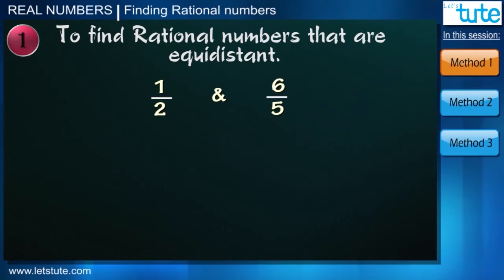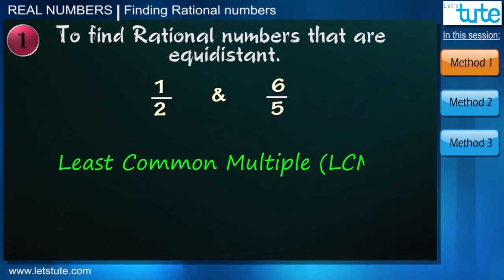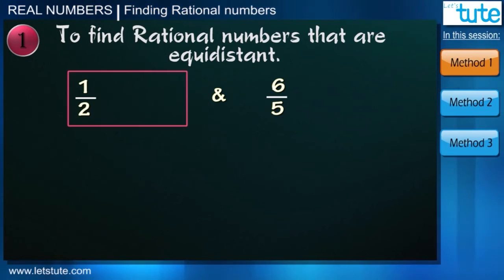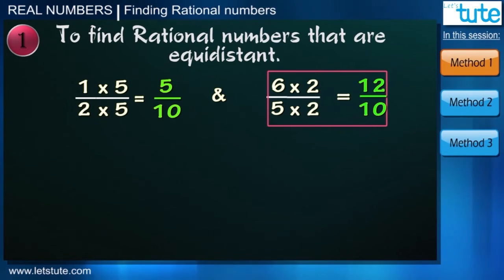Well, we can do this by using the well-known concept of least common multiple or LCM. We know that LCM of 2 and 5 is 10. So to make denominators of both the fractions same, we will multiply the fraction 1 upon 2 by 5 and 6 by 5 by 2. We can see now the denominators are equal that is 10.